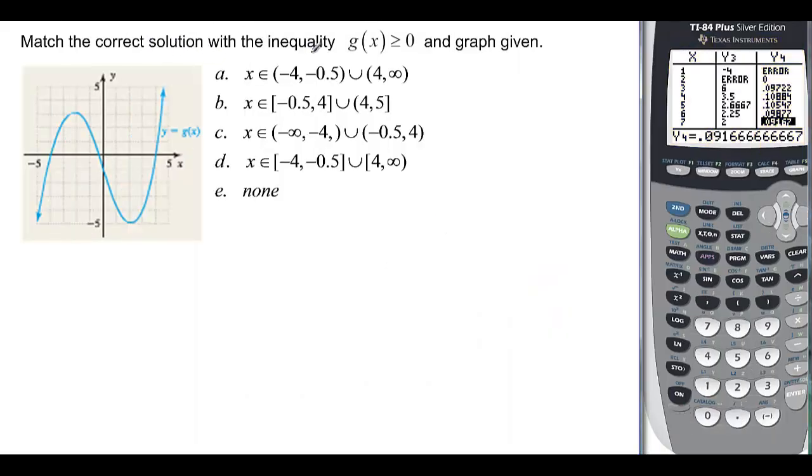Last problem. We have the correct solution with the inequality when g of x is greater than 0. If we look at this, we have a 0 here at negative 4. We have a 0 here that looks like maybe negative 1 half or something to that effect. And then we have one again here at positive 4. And this negative 1 half would be 0.5. So we want it to be greater. So we want it to be between negative 4 and negative 1 half. So it starts at negative 4 and should include it. So it's not going to be this one. This one starts at negative 4 inclusive and goes to negative 1 half. So far, so good. And then we also want this part which starts at 4 and goes to infinity. And it includes that one. So we would say D.